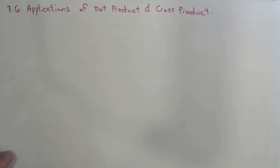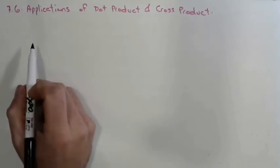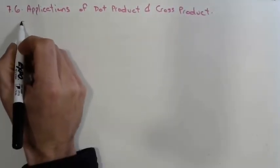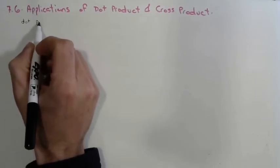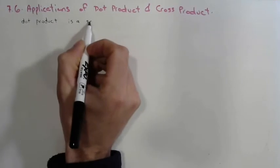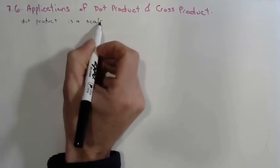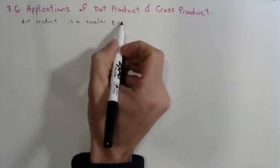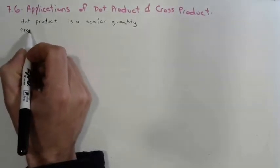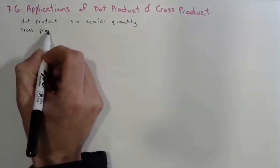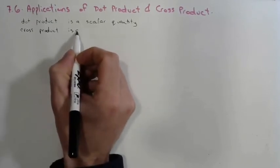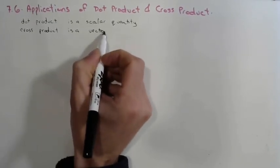Putting it all together in section 7.6: applications of dot product and cross product. A couple things to remember before we move on: dot product is a scalar quantity and cross product gives us a vector quantity.